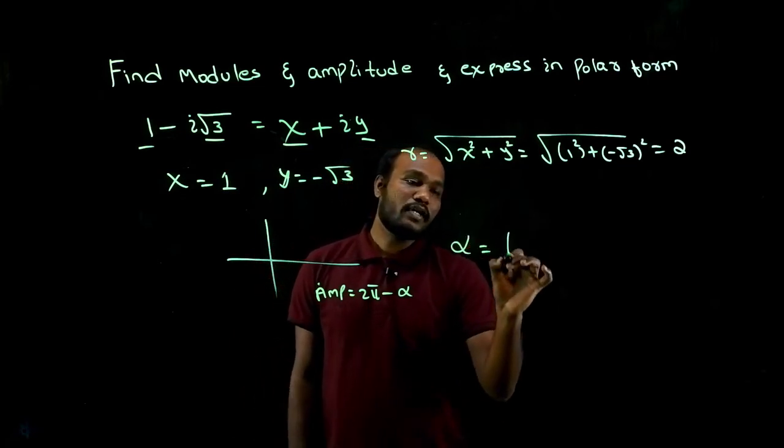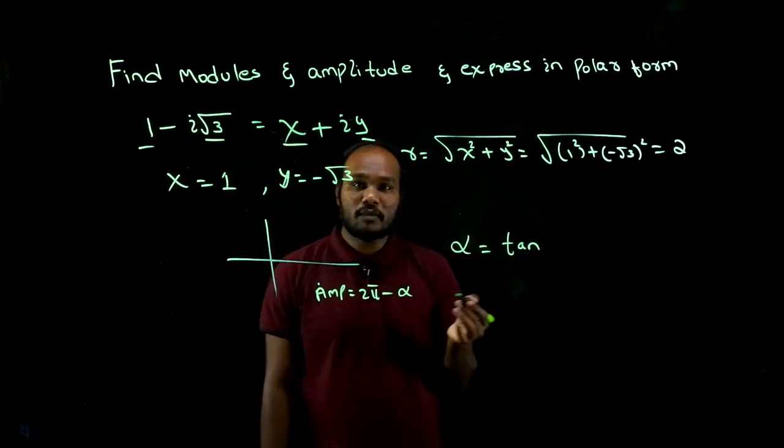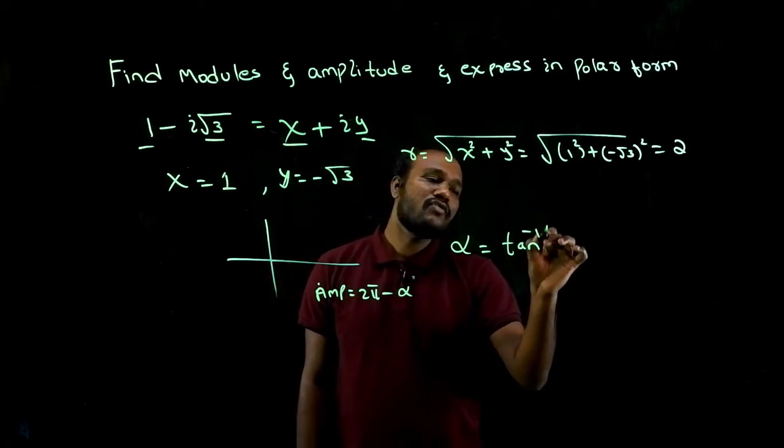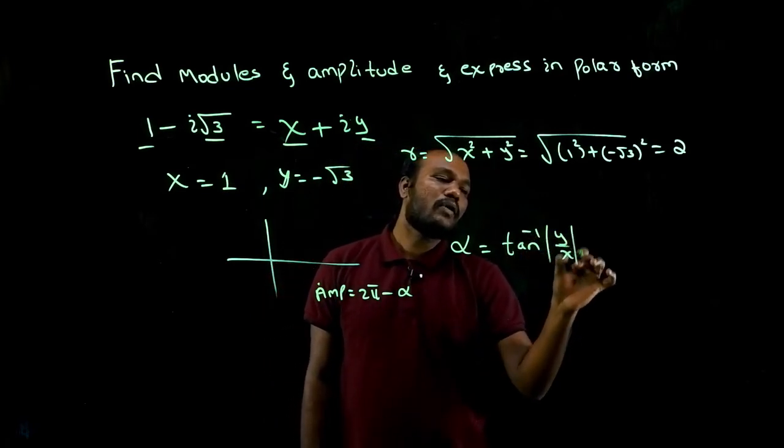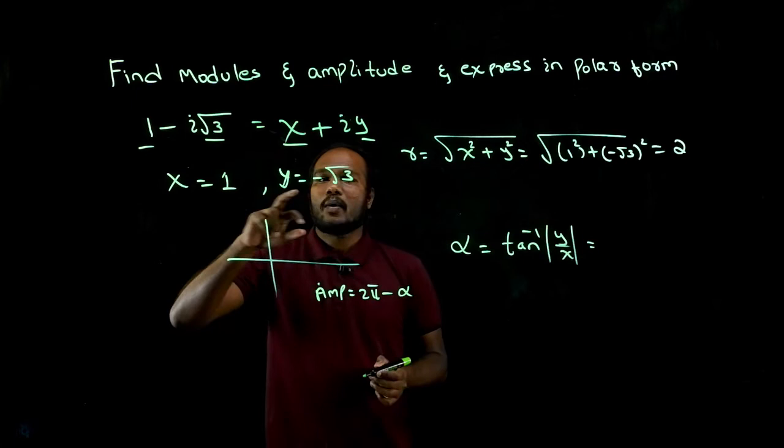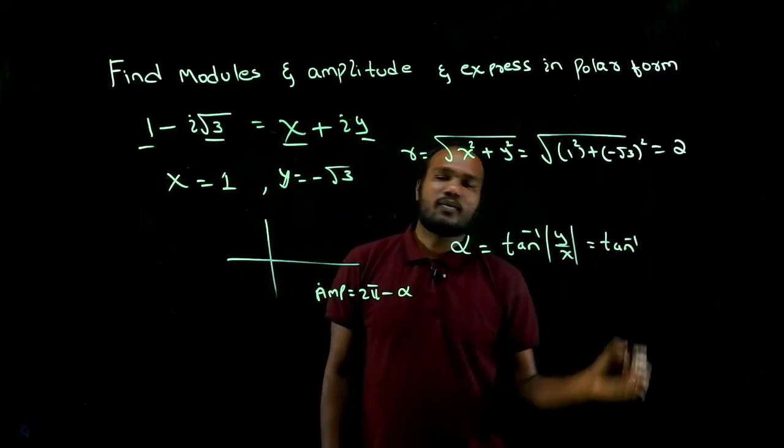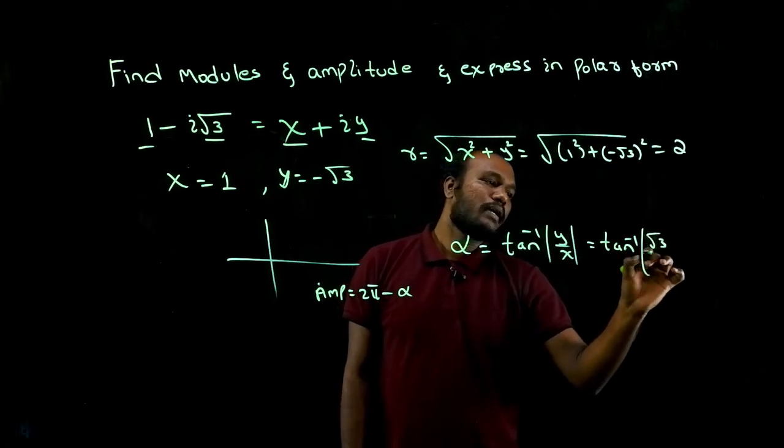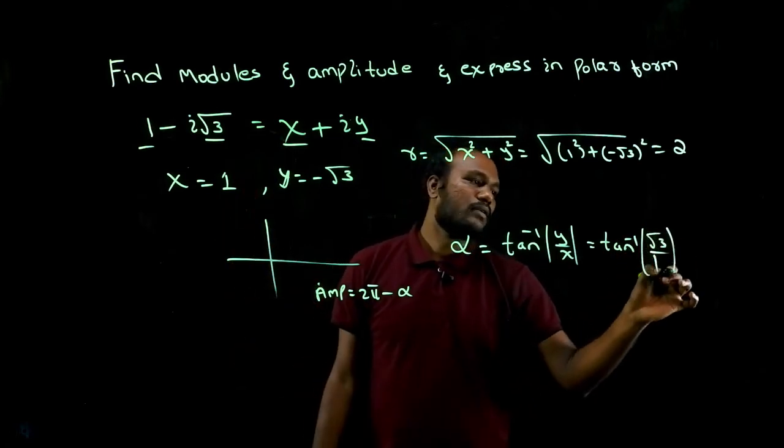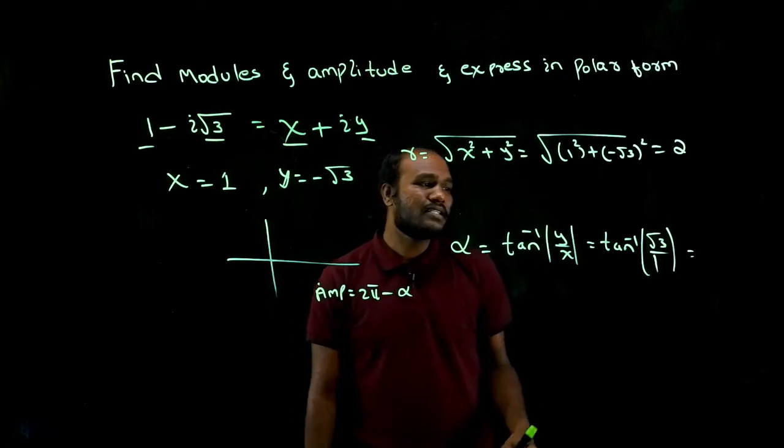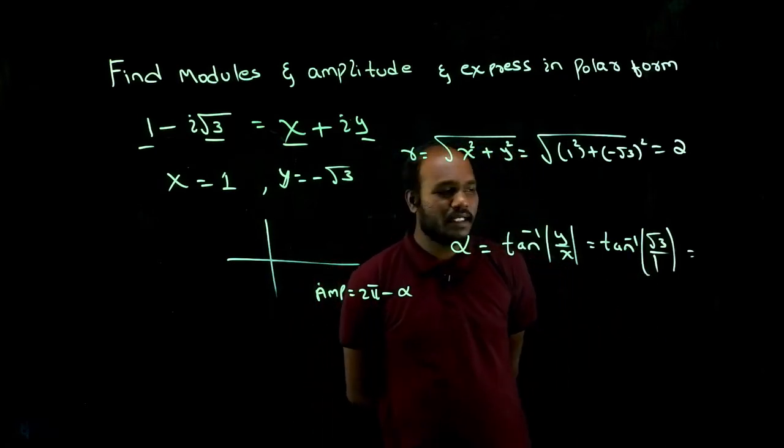Alpha is denoted or represented as the formula tan inverse of mod y upon mod x. Mod means you have to take only y value without the symbol. So tan inverse of what is the y value? root 3 divided by 1. Tan inverse of root 3 is how much? 60 degree. It is nothing but pi over 3.